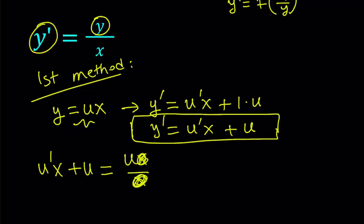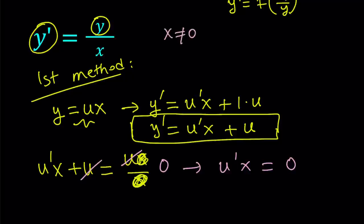Suppose y is not a constant — we're looking for non-constant solutions. After cancelling out the x's, we also cancel out the u's and end up with something really simple: u prime x equals zero. The product of two things equals zero means one of them is zero. We don't care about x being zero since that makes it undefined, so if x is not zero, u prime has to be zero.